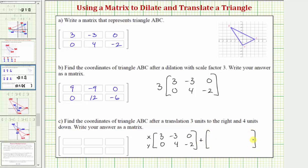Because we want to shift the triangle right three units, we're going to add three to every x-coordinate, so the first row of our translation matrix will be three, three, three. We also want to shift the triangle down four units, so we'll add negative four to every y-coordinate — the entire second row will be negative four. Remember, adding negative four is equivalent to subtracting four. So we're adding three to every x-coordinate, shifting right three units, and adding negative four to every y-coordinate, shifting down four units.